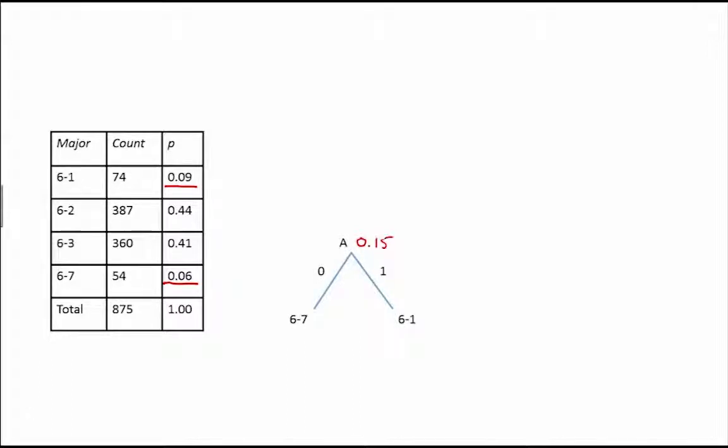The next step is to find the next two smallest probabilities out of the remaining set of probabilities where majors 6-1 and 6-7 have been replaced by node A which has its probability 0.15. In this case, our lowest probabilities are 0.15 which is the probability of node A and 0.41 which is the probability of Major 6-3. So we create a new node B that merges nodes A and 6-3. This new node has probability 0.56.